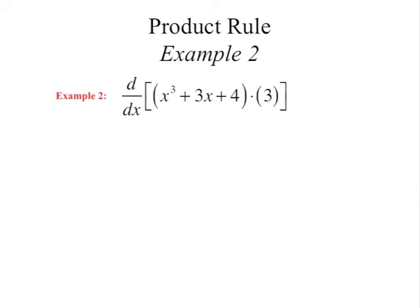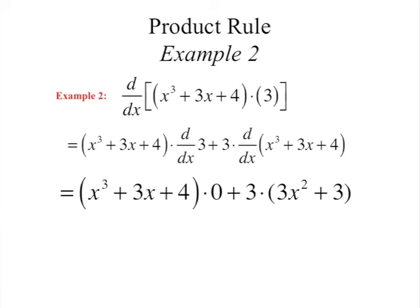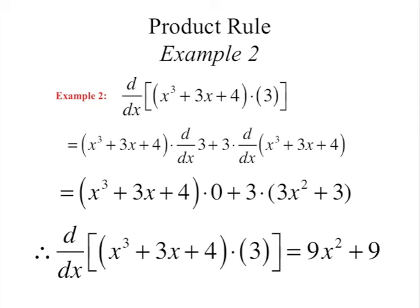Example 2: find the derivative of x cubed plus 3x plus 4, multiplied by 3. You could simply expand and use the power rule, but this illustrates the product rule visually. The derivative of 3 is 0, so the left-hand term vanishes. The derivative of x cubed plus 3x plus 4 is 3x squared plus 3. Multiplying by 3 gives 9x squared plus 9.